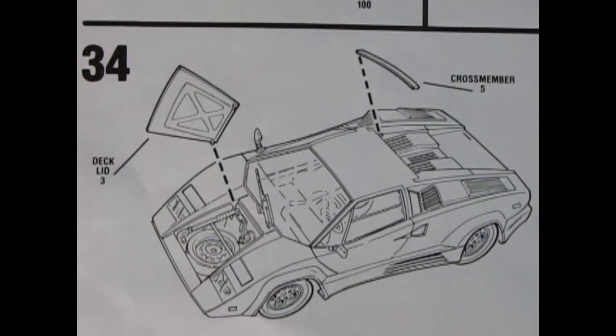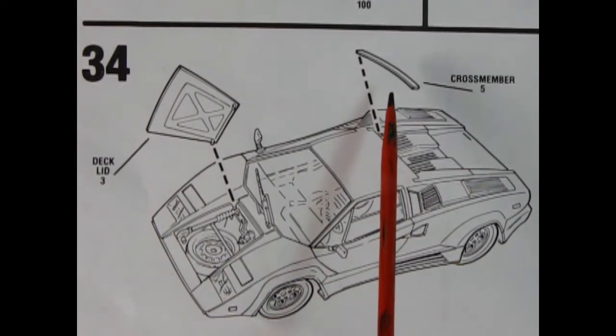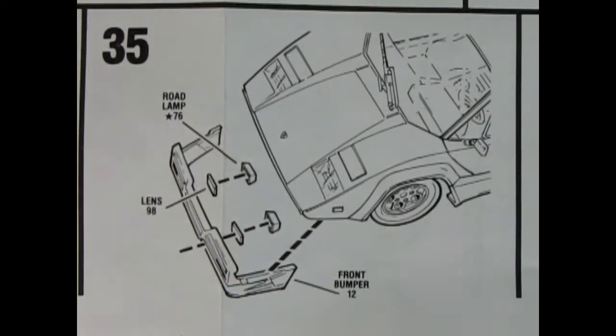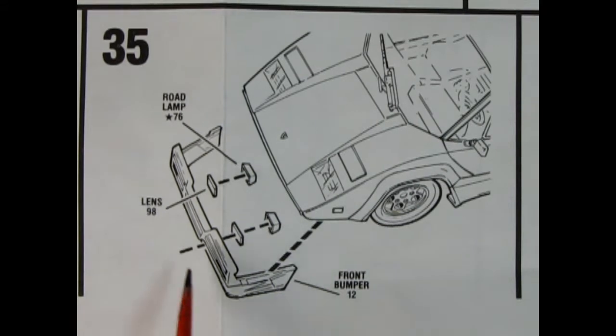In panel 34 we see the deck lid being glued up in the front as well as this cross member off the back. Panel 35 shows the front bumper being glued in place and there's these cool road lamps behind with lenses as well. I didn't see any decals in here, so I guess I'll have to sign off for this video. Have a good one everybody and we'll see you next week.